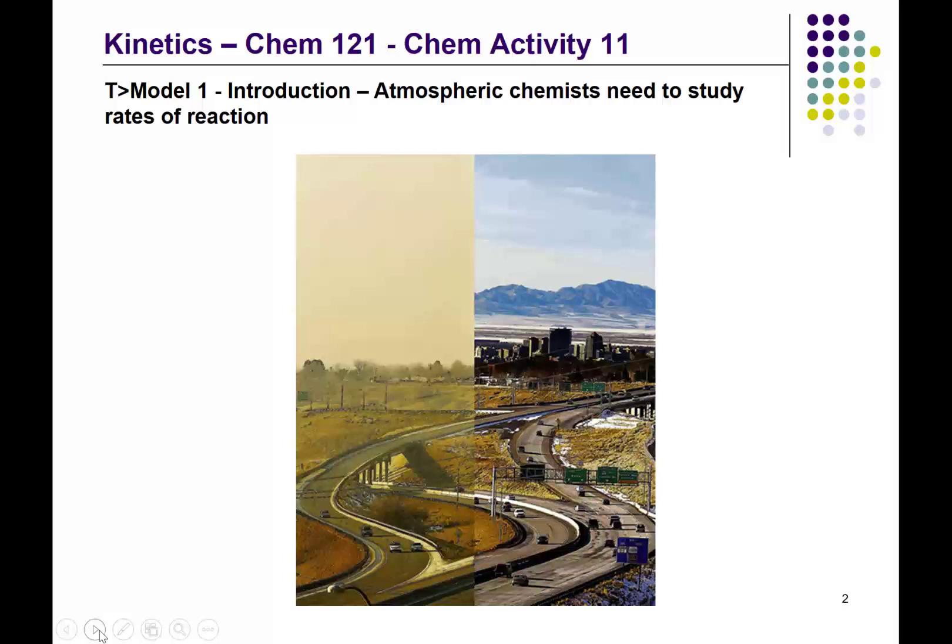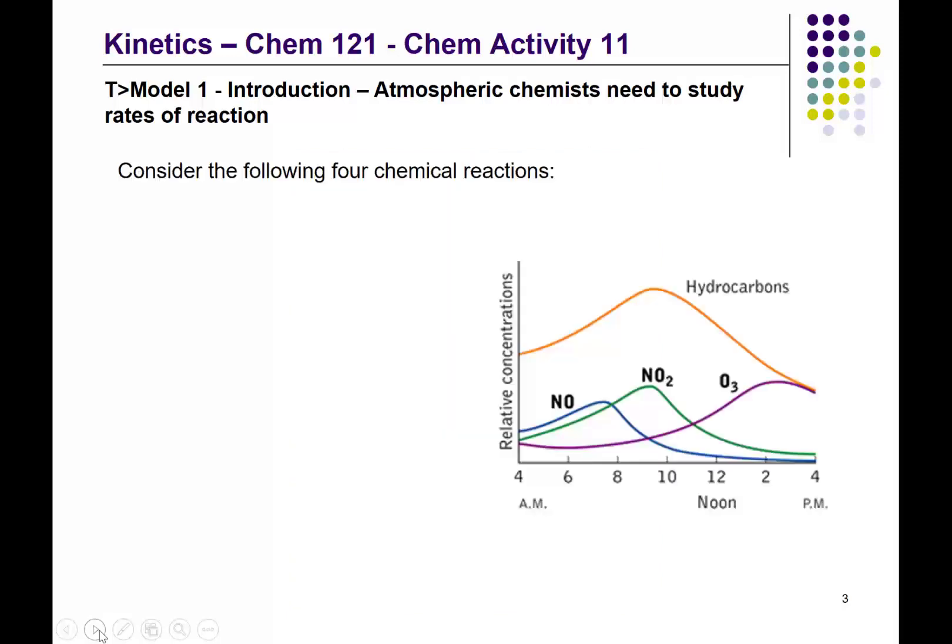In your course pack, you see a framework for making a graph that represents the distribution of gases in a city over the course of a day. I'd like you to trace out the production of these gases — for instance, the nitrogen monoxide, the nitrogen dioxide, and the ozone — which appear or maximize their levels at certain times of the day. We also have hydrocarbons that are produced. You may want to stop the video and trace out these lines.